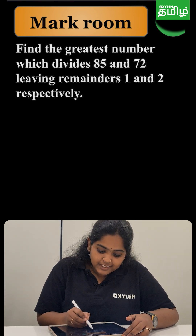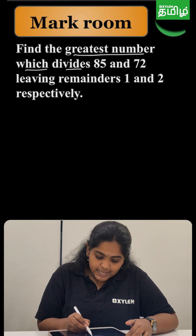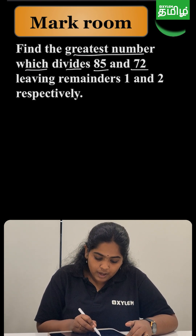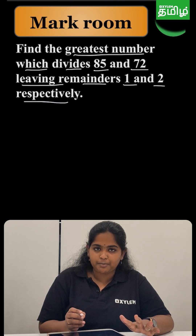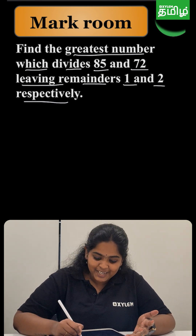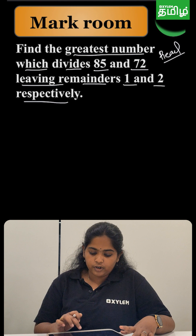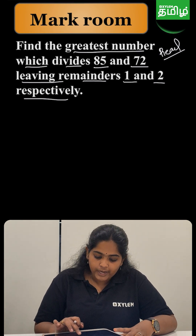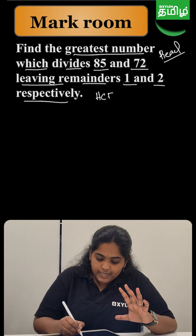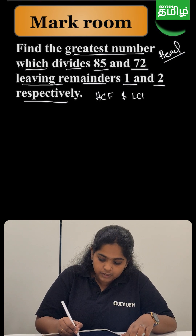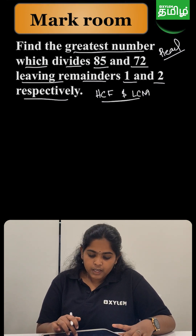Find the greatest integer which divides 85 and 72 leaving remainders 1 and 2 respectively. This is a famous question from the chapter on Real Numbers, and this is the first task we have to find.